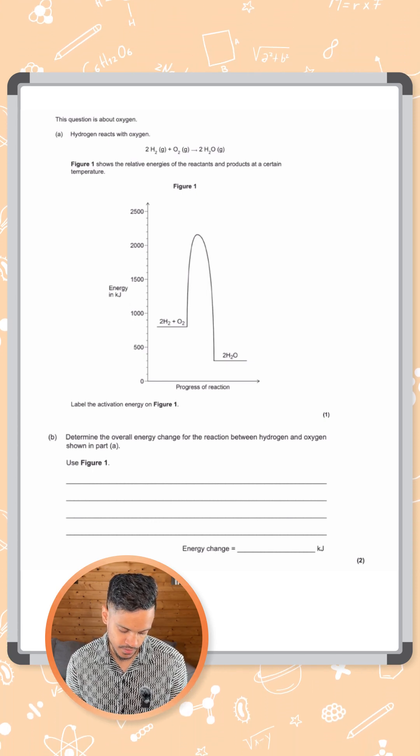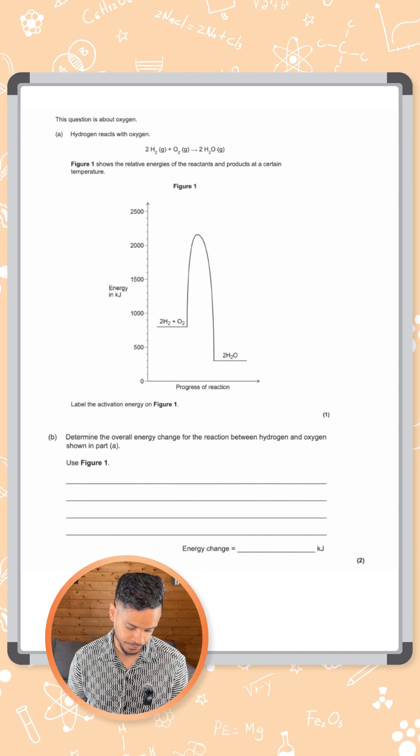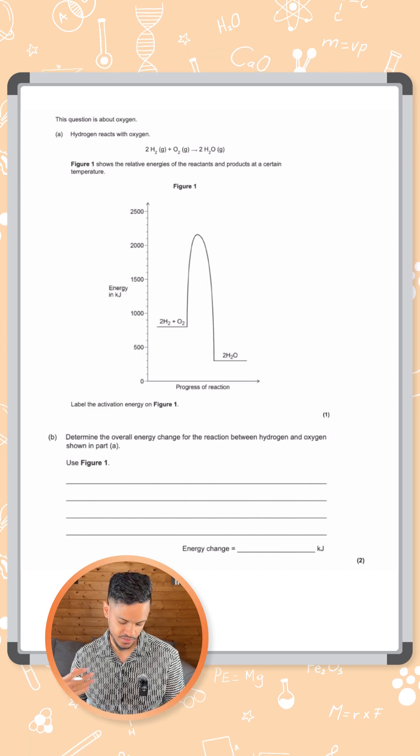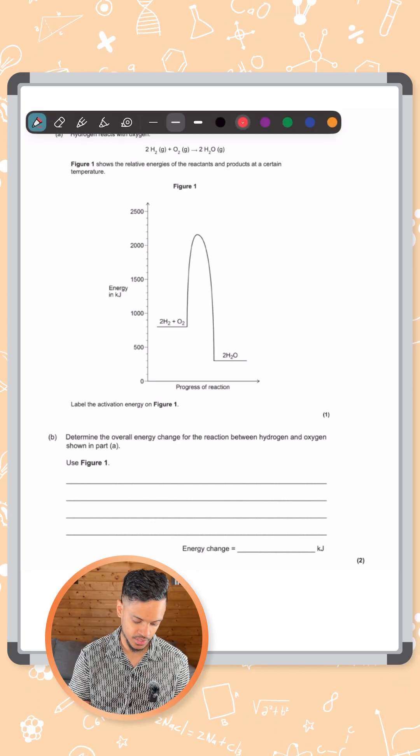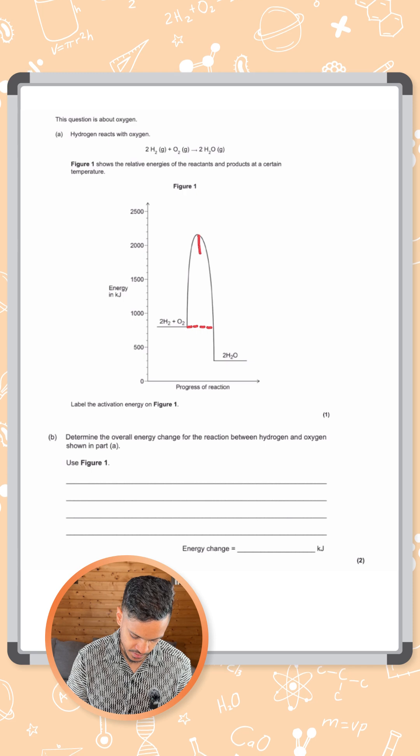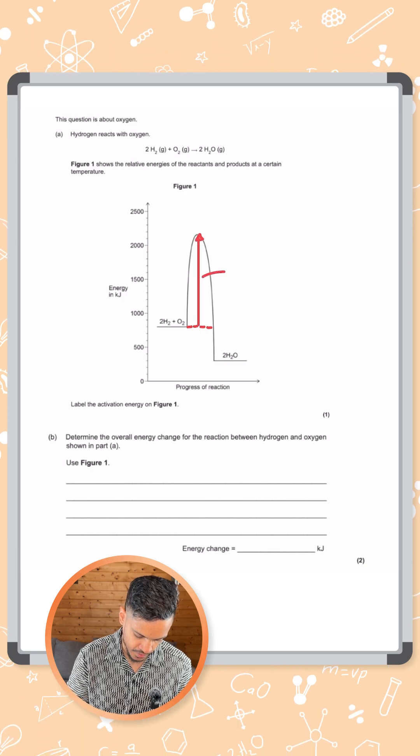First part of the question is very straightforward. It says to just label the activation energy, so that's just the distance from the reactants up to the peak of the graph. That one's quite straightforward.